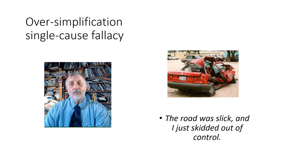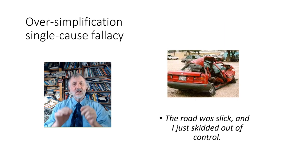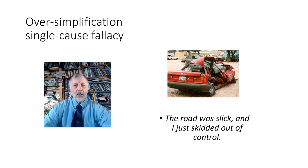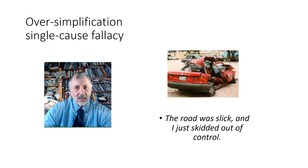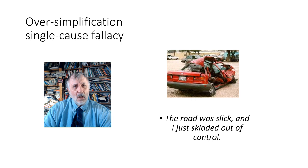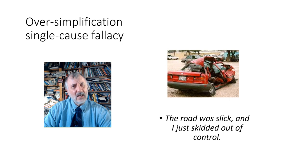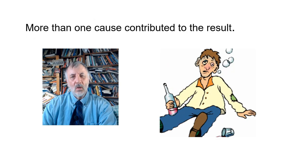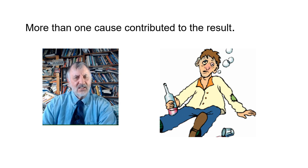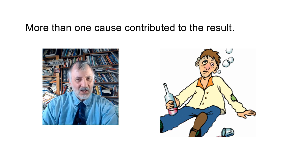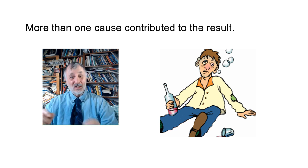Or maybe we attribute something to just a single cause. In real life, sometimes there are multiple causes for something. For instance, what caused the accident? 'Well, the road was slick, I skidded out of control.' Sounds reasonable. But was there anything else that contributed? Maybe the 17 tequilas you had before you left the bar had a little bit to do with the accident. So there's more than one cause — not just the road being slick.